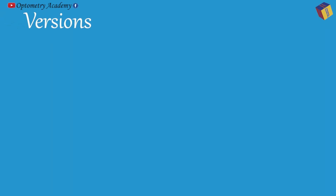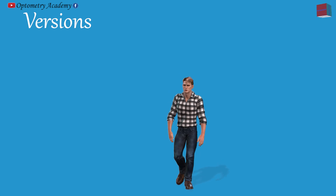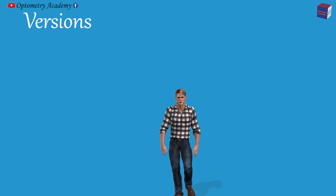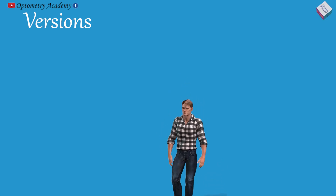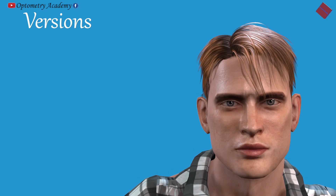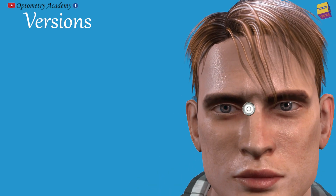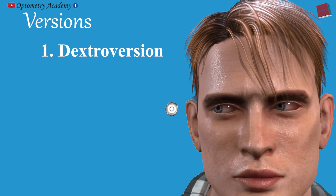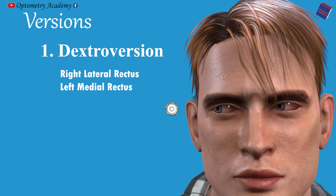Let's move on to versions. Versions are synchronous and symmetric movements of both eyes in the same direction, classified according to the direction of binocular movement. Dextroversion: when both eyes are turned to the right, it is effected by a simultaneous contraction of the right lateral rectus and left medial rectus muscle.